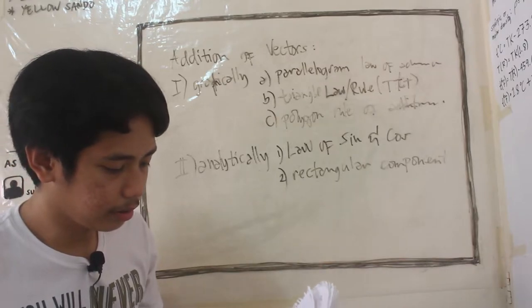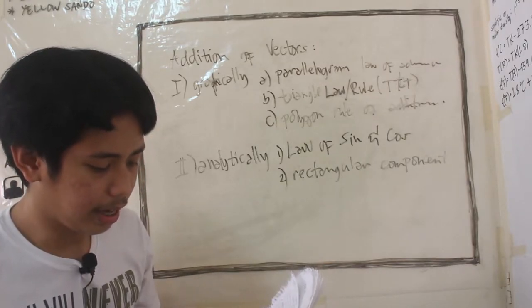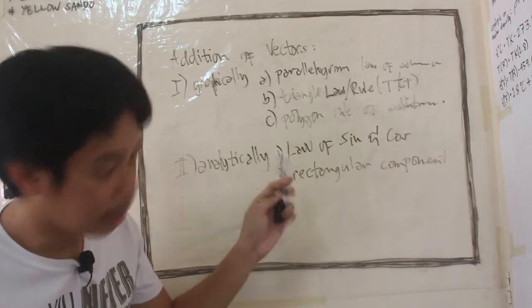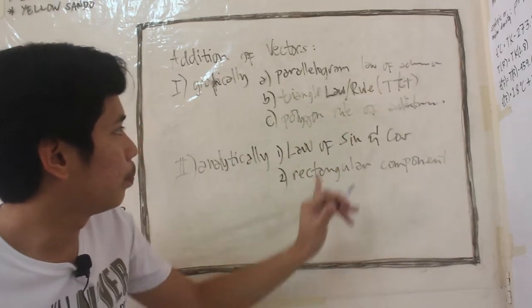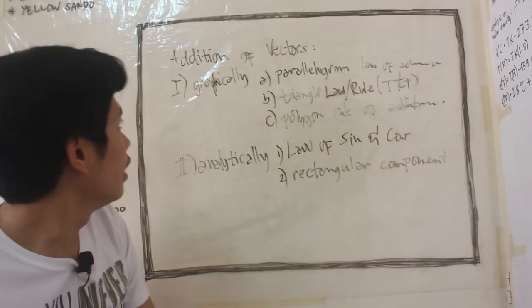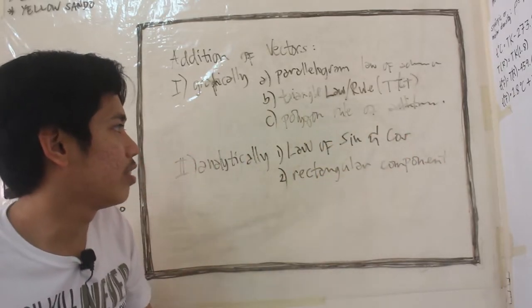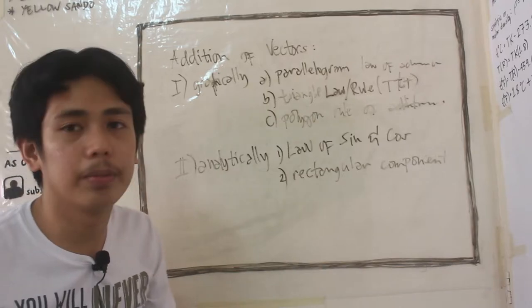Tip to tail right? Yeah, it's tip to tail rule, tip to tail way of adding vectors. And the polygon rule of addition. And addition of vectors analytically, we have law of sines and cosines and the rectangular component.